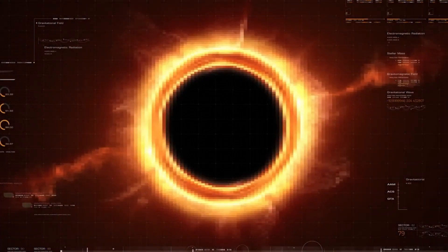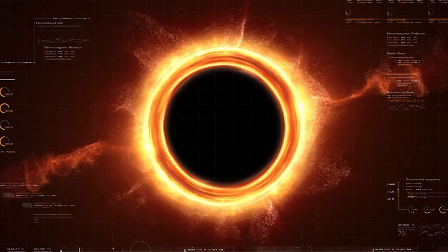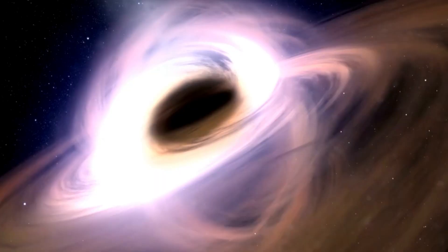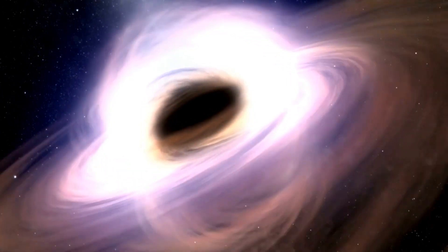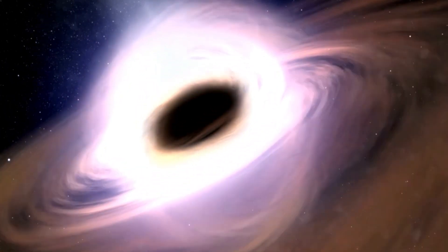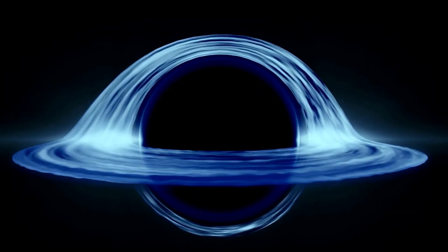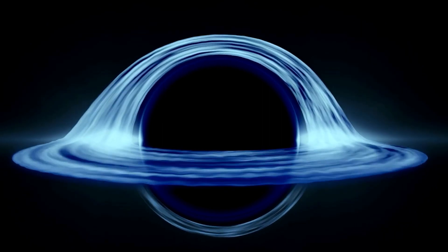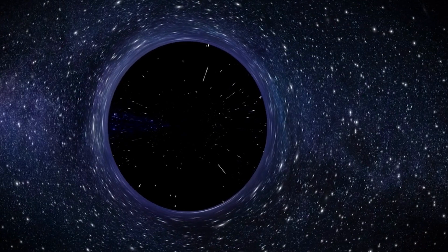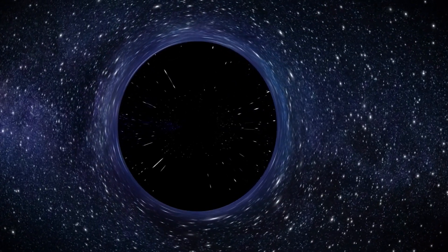One way that scientists have been studying black holes is by looking at their effects on nearby matter. When matter falls into a black hole, it gets heated up and emits intense radiation, including X-rays. By studying the X-rays emitted by matter falling into black holes, scientists can learn about the properties of the black holes themselves, including their mass and spin.